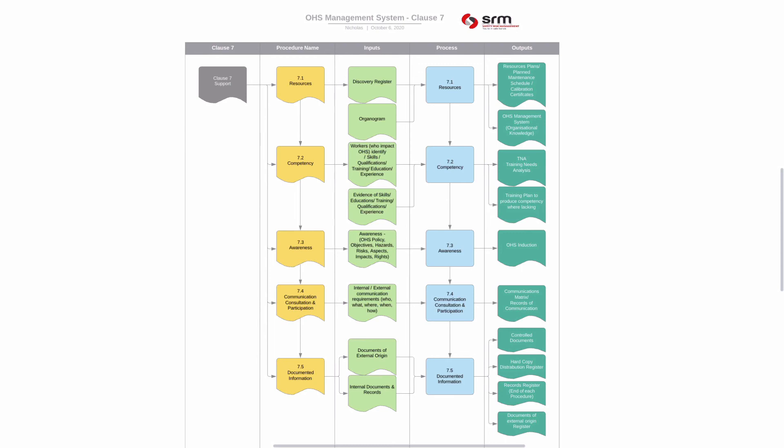I have a procedure for communication — I like to amalgamate communication, consultation, and participation into one. I use a communications matrix that addresses the what, when, how, who, and whether there is consultation and participation with regard to internal and external communication.